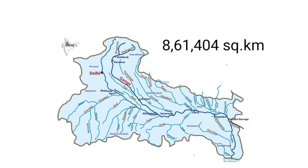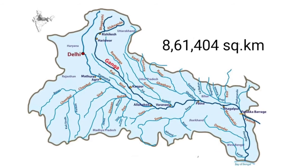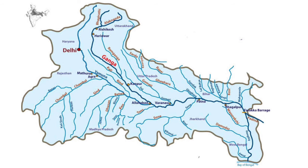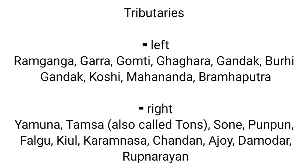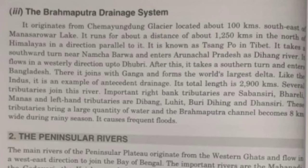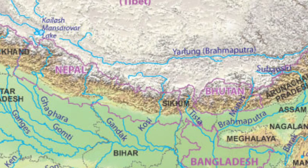River Ganga has around 861,404 square kilometers of basin area in India. When talking about tributaries, River Ganga has numerous tributaries. As you can see on the map, the most important tributary is River Yamuna, which joins River Ganga on its right bank near the city of Allahabad. There are many other tributaries joining on its left and right banks — here is the list of rivers which join River Ganga.